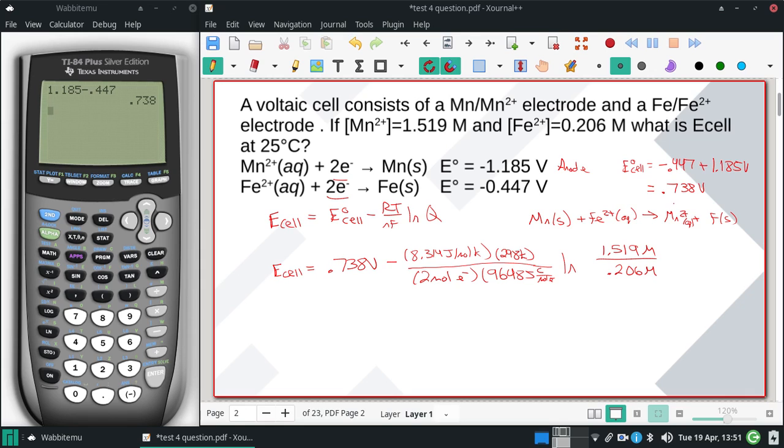notice that [Mn²⁺] > 1 and [Fe²⁺] < 1. Because of this, the reaction favors the reverse direction relative to standard conditions, so E_cell should be less than 0.738 V.